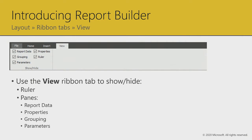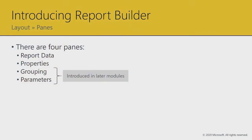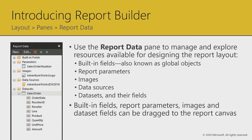With larger monitors today, you can leave all the panes on at all times. But if you're constrained for space, you might toggle them on or off. Let's focus on two panes: the report data pane and the properties pane. The report data pane, docked to the left of Report Builder, helps you manage and explore your resources for designing your report layout. Available built-in fields include report name, execution time, page numbering, and the user currently opening the report.